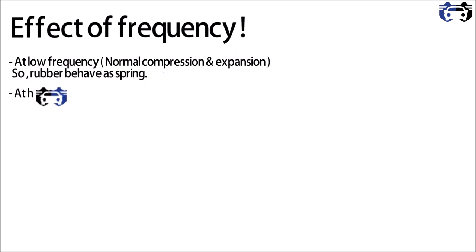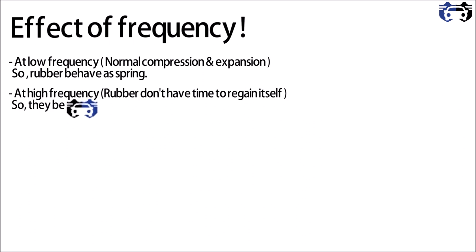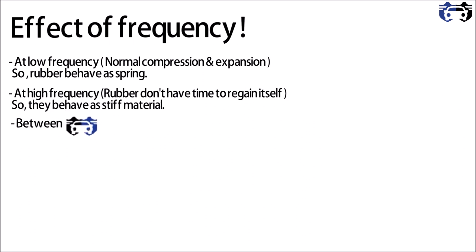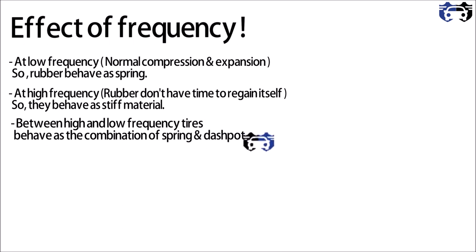At low frequency the molecules regain their shape and the tire behaves as a spring. At high frequency the rubber doesn't have enough time to regain its shape, so it behaves as a stiff material. At moderate frequency the tires behave as a combination of spring and dashpot — that is, they behave as a viscoelastic material — and this is the range where tires are generally operated.